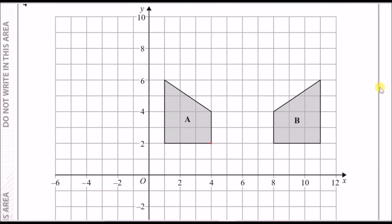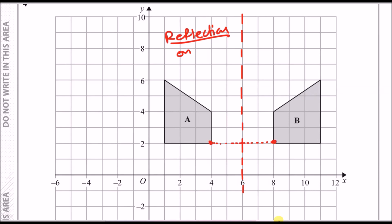Number four, part a: describe fully the single transformation that maps shape A onto shape B. This looks like a reflection. Pick a corner of A and its corresponding corner on B, measure the distance between them — there are 4 blocks — so the mirror line is halfway, at x = 6. The answer is: reflection in the line x = 6.